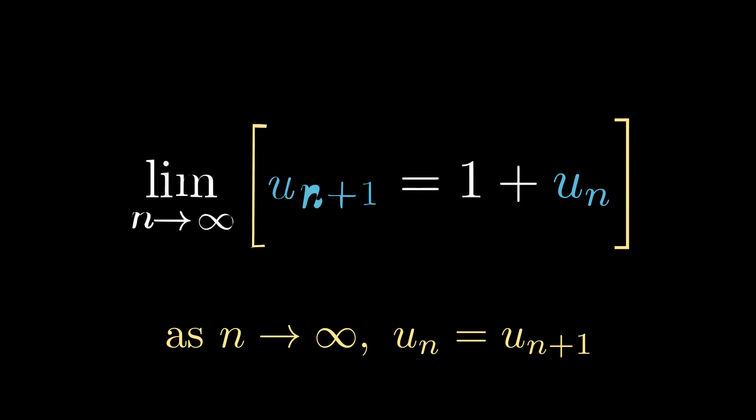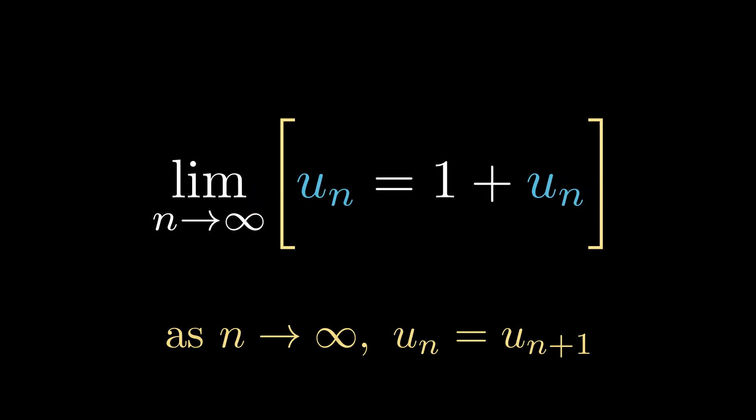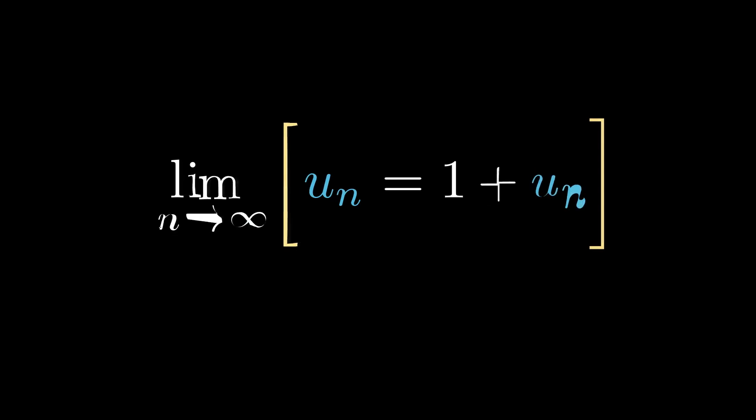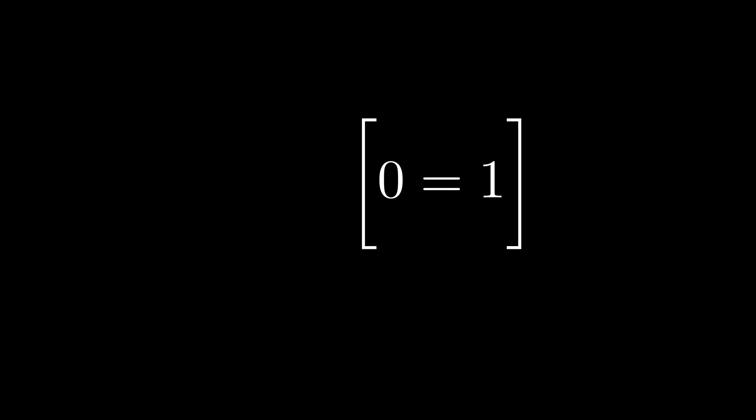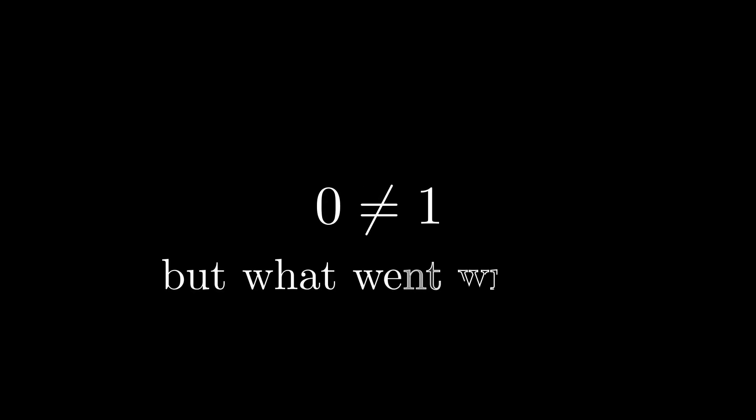We can then subtract u(n) from both sides of the equation, and then simplify. And we are left with the solution. And as there are no terms including n, we can remove the limit, leaving us with the solution that 0 equals 1. But obviously 0 doesn't equal 1, so what went wrong?